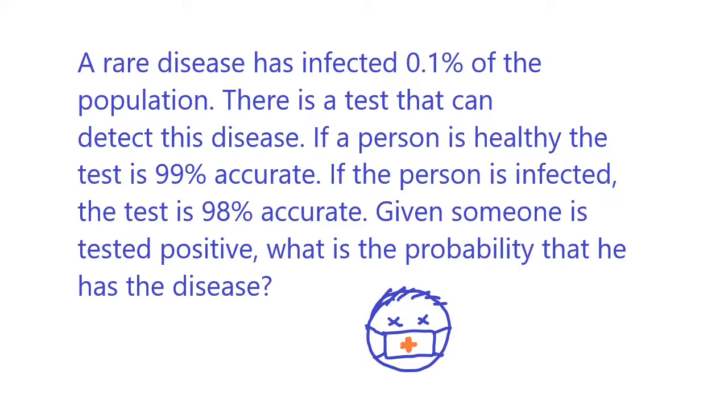If a person is healthy, the test is 99 percent accurate. If the person is infected, the test is 98 percent accurate. Given someone is tested positive, what is the probability that he has the disease?